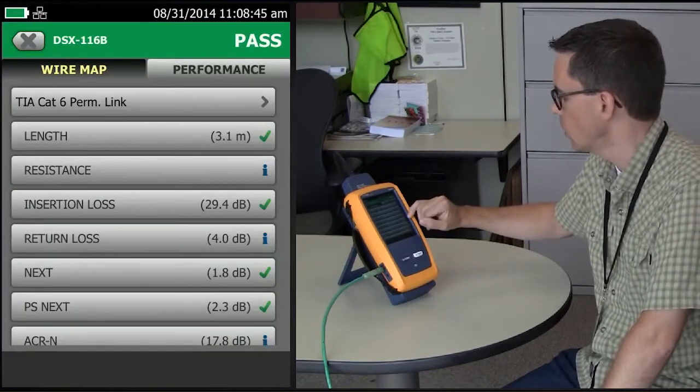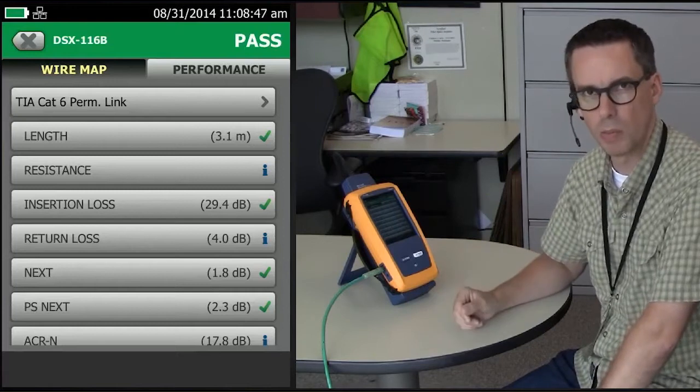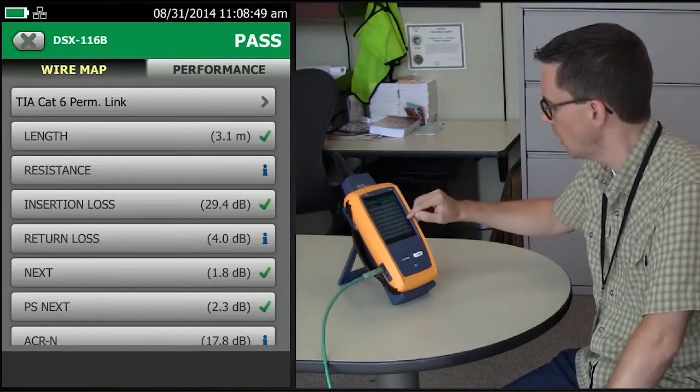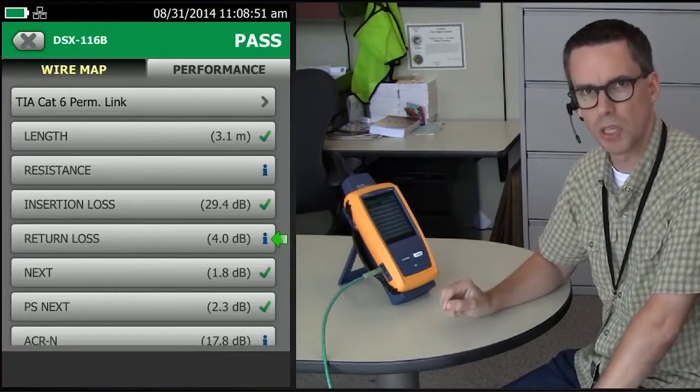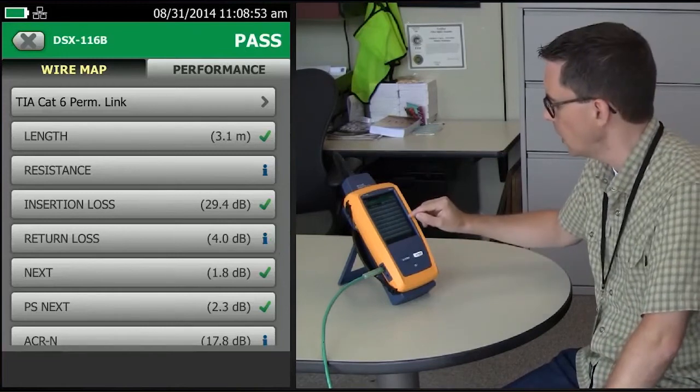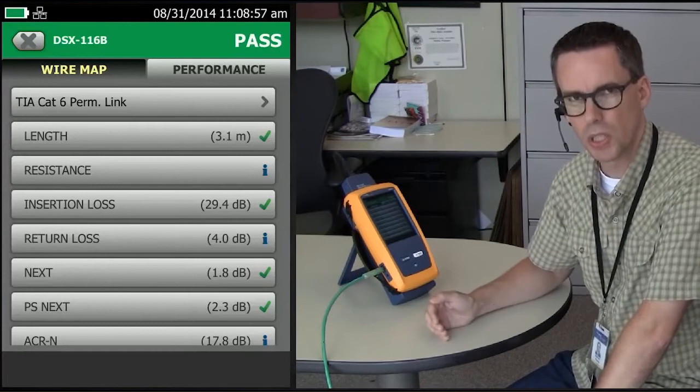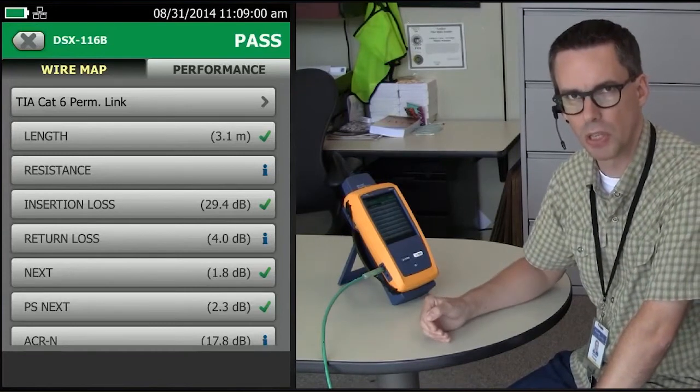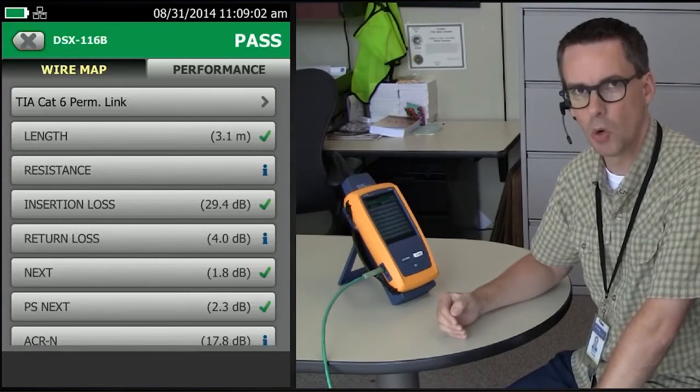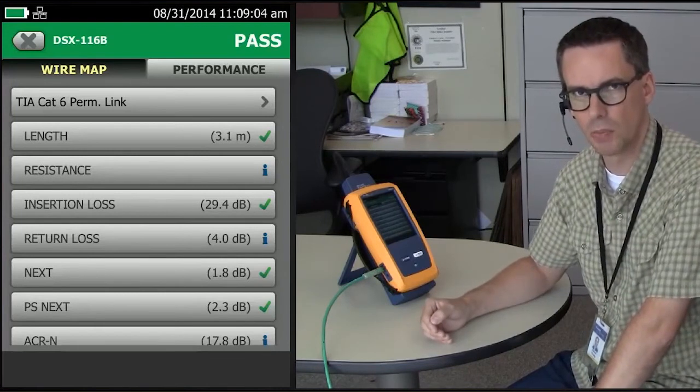When we look at return loss, good news, it passes 4 dB margin, but you'll notice there's an I next to it. There's no tick mark. And that's because, with the 3 dB rule, if the link is short enough, the insertion loss may never actually reach 3 dB. So you end up ignoring the entire return loss measurement.